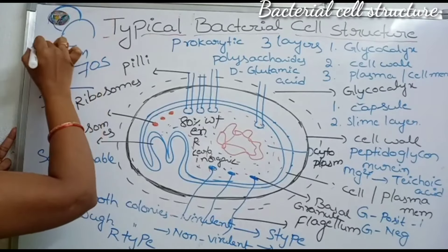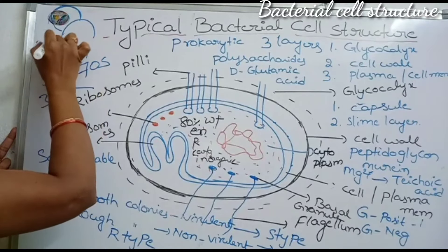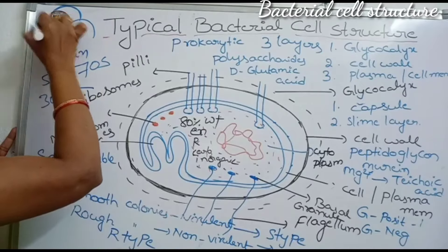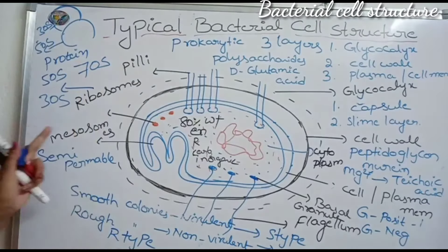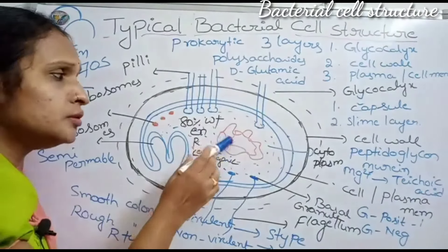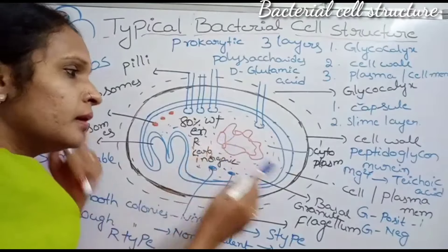The 70S ribosome is classified into two subunits: 50S and 30S. The larger subunit is 50S and the smaller subunit is 30S.